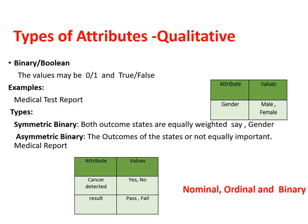Binary attributes are either 0 or 1 — for example, a medical test result like COVID positive or negative. Symmetric binary means both outcome states are equally weighted, like gender (male or female). Asymmetric binary means the outcomes are not equally important — for example, a cancer diagnosis, where the impact differs significantly between outcomes.